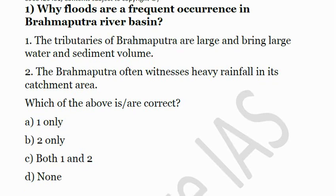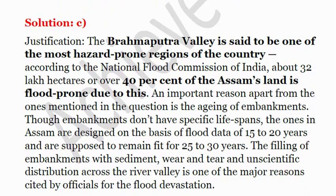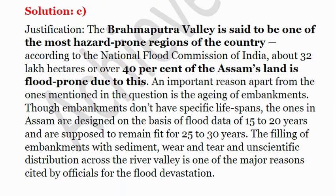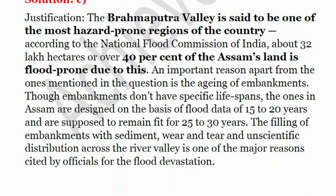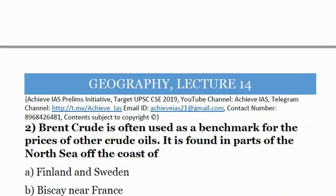The answer is C, that is both 1 and 2. As already explained, 40% of Assam's land is flood prone due to this, and there are multiple other reasons also associated with this.